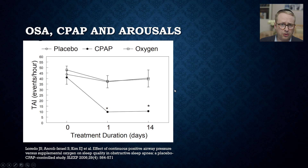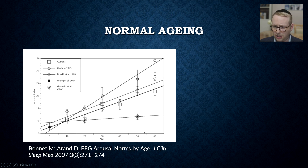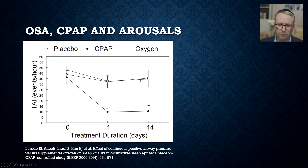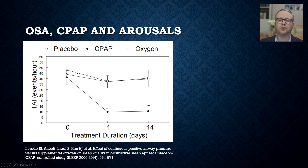Interestingly, if we take the example of obstructive sleep apnea and you give people some oxygen, it actually makes very little difference to the number of arousals they have during the night, which can be staggeringly high — around 40, 45, or 50 times per hour. Taking the typical person maybe in their mid-50s, you'd expect about 20 to 25 arousals per hour; these patients are having something like 45. Give them a CPAP — continuous positive airway pressure support — and the number of arousals goes down almost immediately and is sustained. So arousals are very common, become increasingly common as we get older, and for those with obstructive sleep apnea, this can be very reversible.